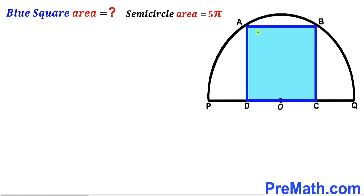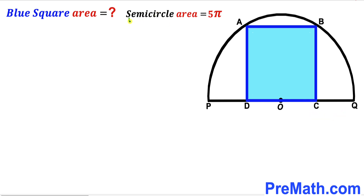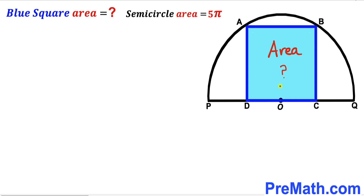Welcome to pre-math. In this video we have got this blue shaded square ABCD fully inscribed in a semicircle with a center O, as you can see in this given diagram. OP and OQ are the radii of the very same semicircle. The area of the semicircle has been given to us as 5 times pi square units, and our task is to calculate the area of this blue shaded square ABCD.